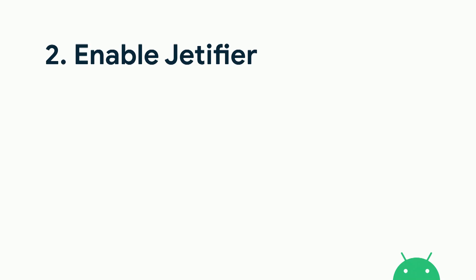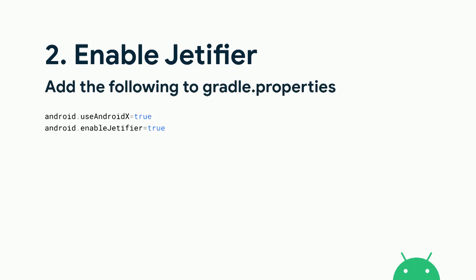Here's how to enable Jettifier in your app: add a couple of lines to your gradle.properties file — set useAndroidX to true along with enableJettifier. The useAndroidX setting means that when you do code auto-completion and are importing libraries, you'll import the AndroidX version instead of the old Support Library version.